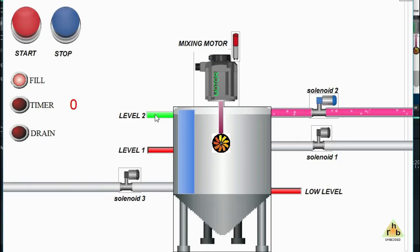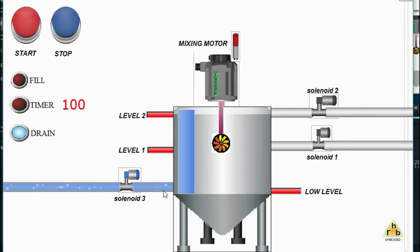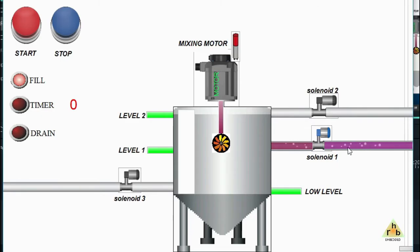Once the level of the tank increases and reaches the maximum level, the Level 2 sensor detects the higher level and turns on. Now both solenoid valves 1 and 2 are turned off, and the mixing motor starts and runs for 10 seconds. As soon as the mixing motor stops, solenoid valve 3 is turned on and liquid from the tank is drained out. As the liquid drains, the levels decrease — Level 2 turns off, then Level 1 turns off — and when it reaches the lower level, solenoid 3 stops and solenoid 1 starts again.